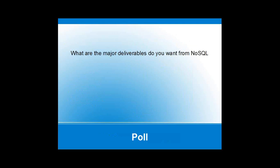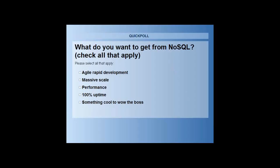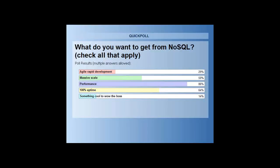One of the things you're looking to get from NoSQL — the next poll. The different options: maybe it's agile rapid development, massive scale, performance, 100% uptime, or perhaps just something cool to wow your boss. It looks like performance is the most important, followed by uptime, then scaling and agile development.